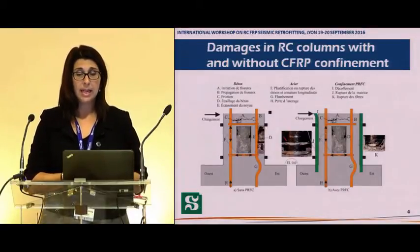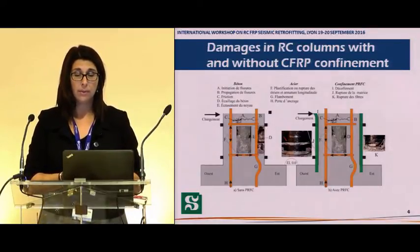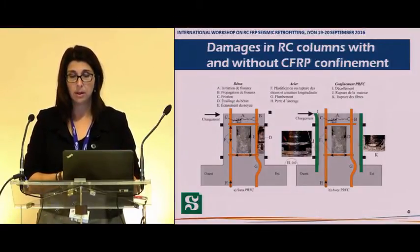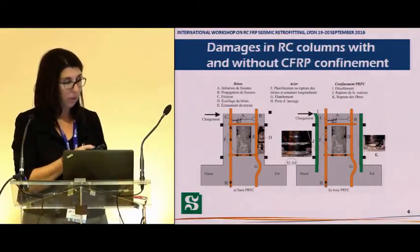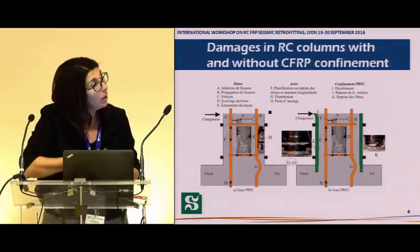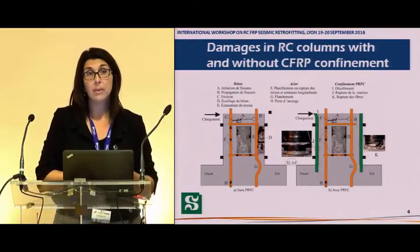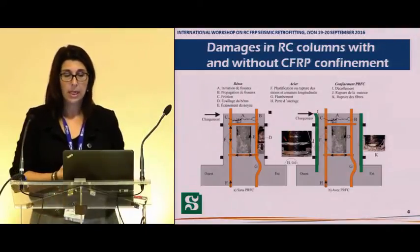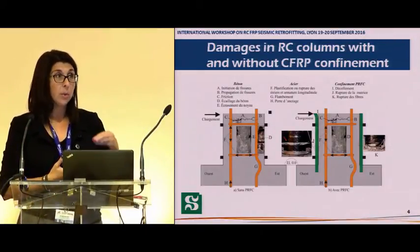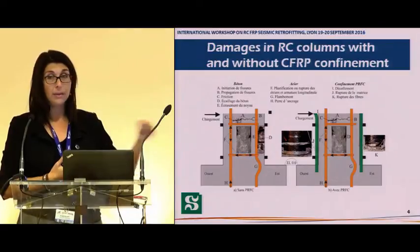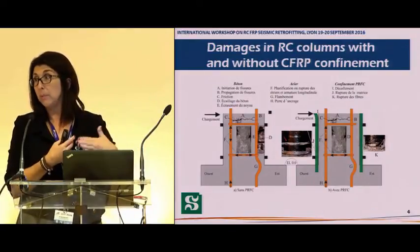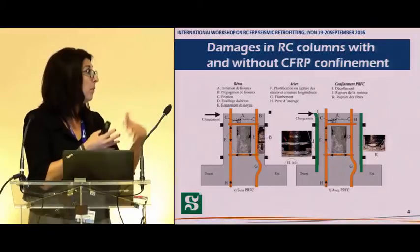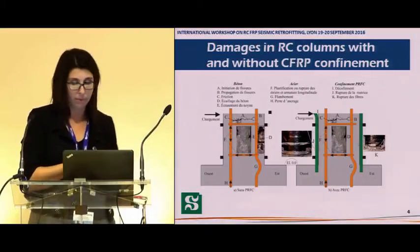What we know is that the limit states of reinforced concrete columns confined with CFRP are different from those of an unconfined column. As you can see on the figure, other damage parameters appear during the loading of the columns, and the damages also occur in a different order. The CFRP will fail before concrete spalling, for example.